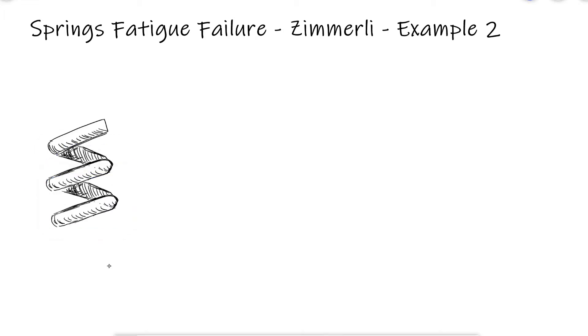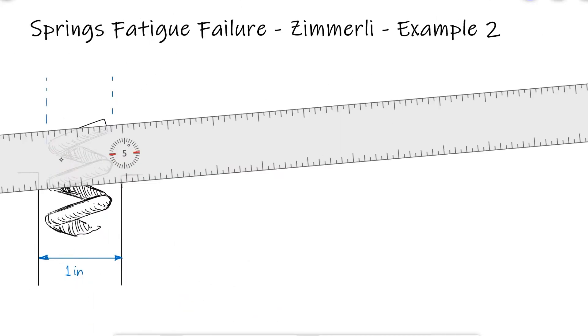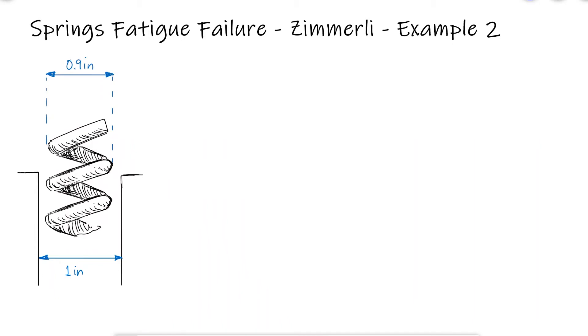A compression spring is needed to fit within a one inch diameter hole. To allow for some clearance, the outside diameter of the spring is to be 0.9 inches. The spring has a spring index of 8, and it's used in a machine that will compress it from a free length of 3 inches to a solid length of 1 inch.